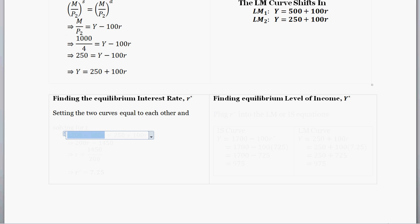So our IS curve that we derived earlier is the 1700 minus 100R. And our LM curve that we just derived is that 250 plus 100R. So now we're going to find, solve for R. That's going to give us our equilibrium level of R. So that's what we do with these next two simple algebra steps. So we find our new equilibrium level of interest rates. R star is 7.25.